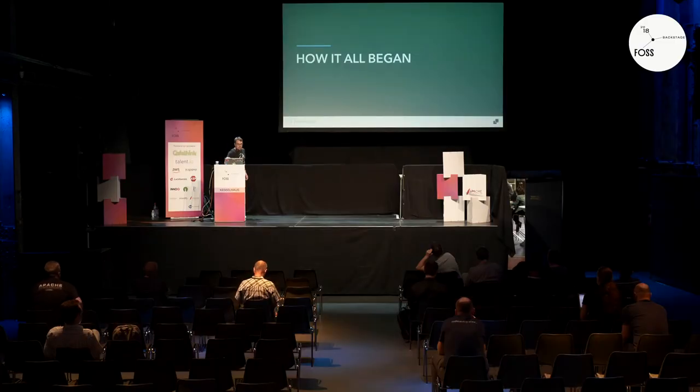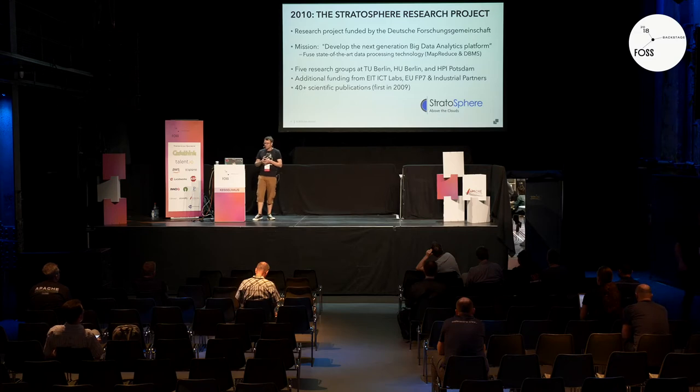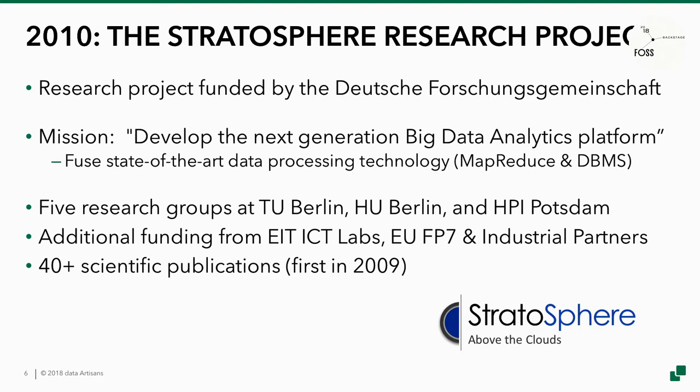So how did this all start? The software started out as an academic research project. Back then it was called Stratosphere. The project was funded by the German Forschungsgemeinschaft, which is like the German equivalent of the NSF in the US — a government-funded institution to fund research projects. The mission was to develop the next generation big data analytics platform. The project started in 2010 and involved something like six or seven PhD students, five professors, and a couple of master's students.